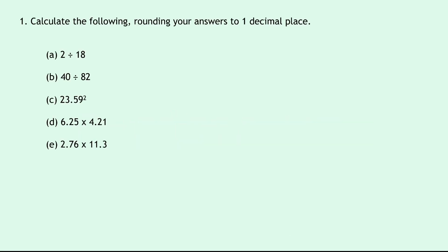The first set of examples we're going to look at is rounding your answers. Question one says calculate the following rounding your answers to one decimal place. So if we do 2 divided by 18 in your calculator, you should get 0.1 recurring. But remember in National 5 Physics we don't do recurring symbols and we also need to round our answers. So rounding this to one decimal place will give us 0.1 as our answer.